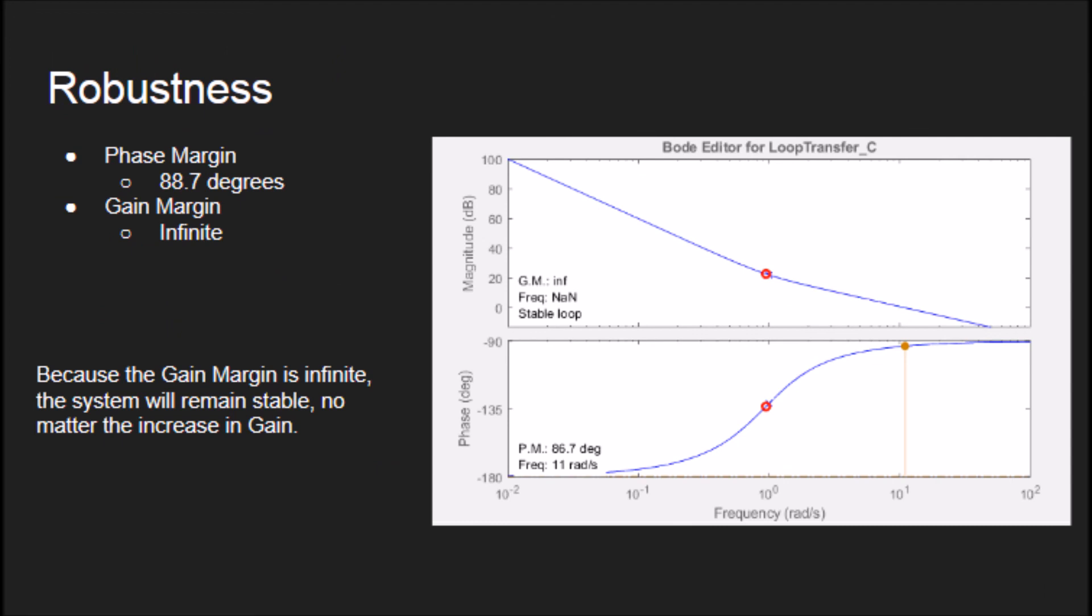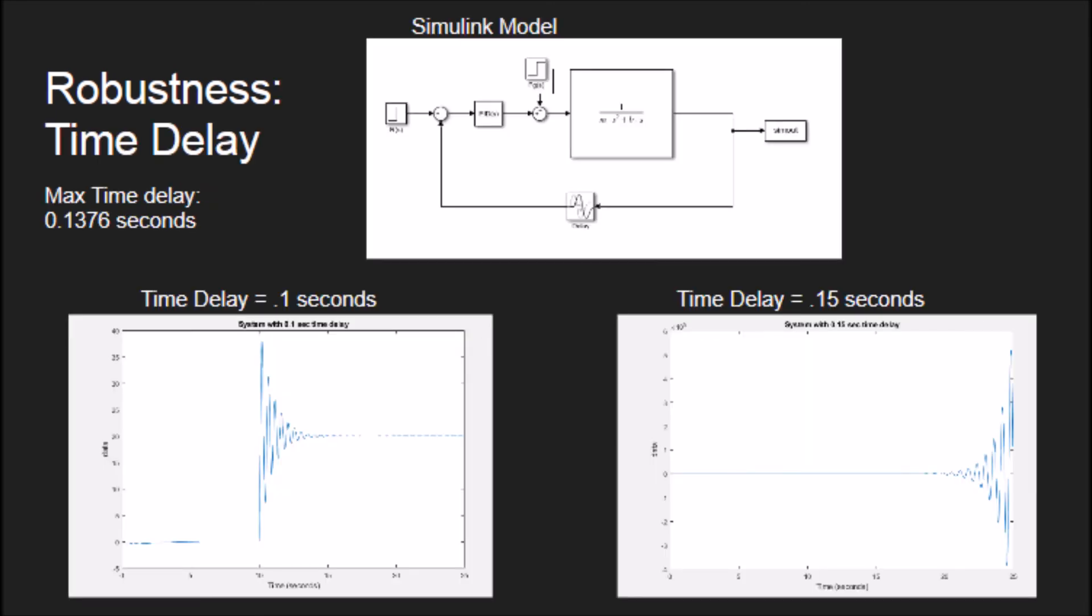From the Bode plots generated in MATLAB, we can see that our gain margin is infinite and our phase margin is 88.7 degrees. This means that while we can use any gain we want, we can only have a maximum of 0.1376 seconds of time delay before the system becomes unstable, which is verified by the graphs from Simulink.